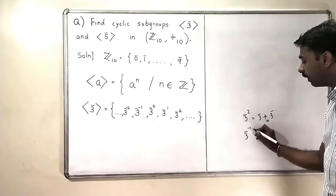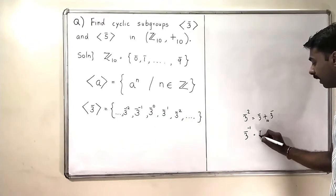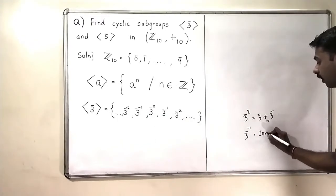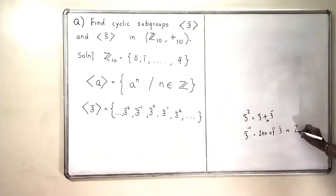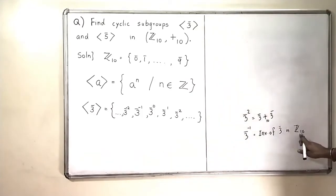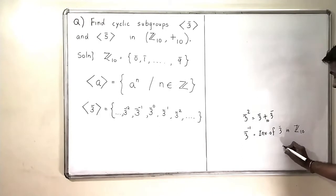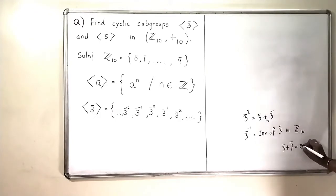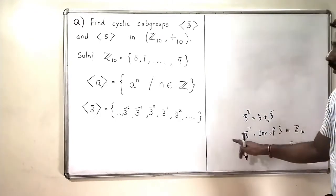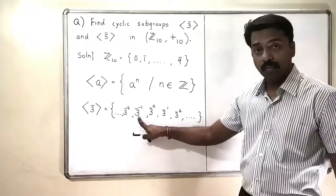What is 3̄ raised to minus 1? It means the inverse of 3̄. What is the inverse of 3̄ in Z10? The inverse of 3̄ is 7̄, because 3̄ plus 7̄ equals the identity, which is 0̄. So this is the meaning of 3̄ raised to minus 1.